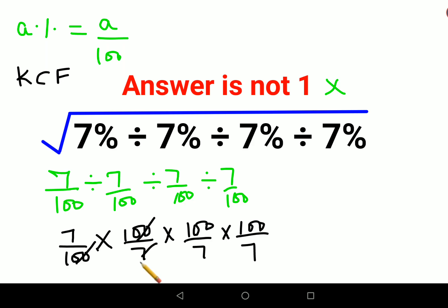So this 100 and this 100 will cancel. This 7 and this 7 will cancel. So basically you are now left with 100 into 100 upon 7 into 7. That is basically 100 upon 7 the whole square.